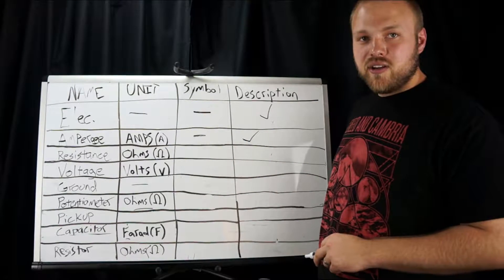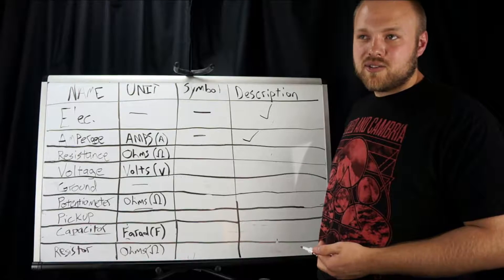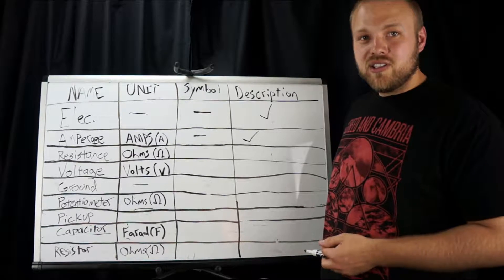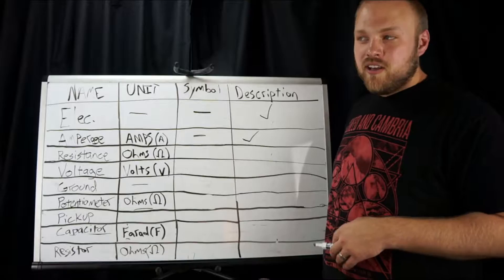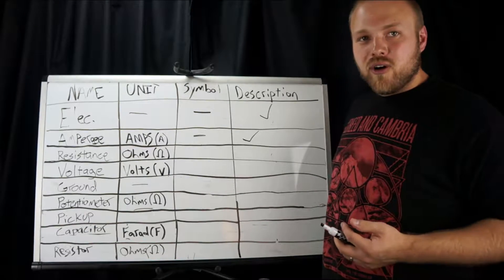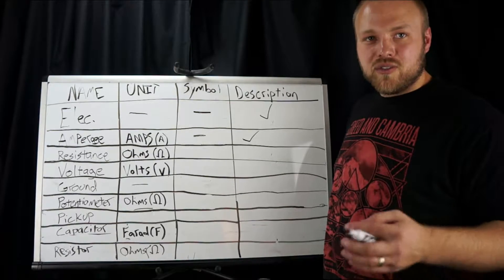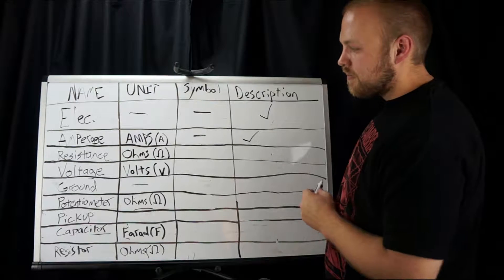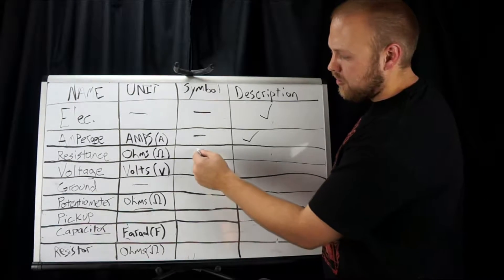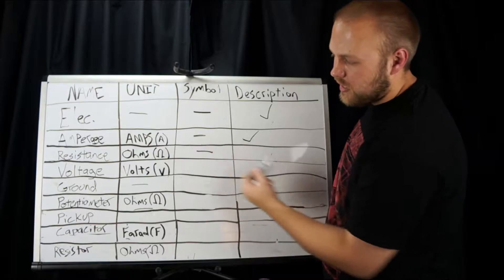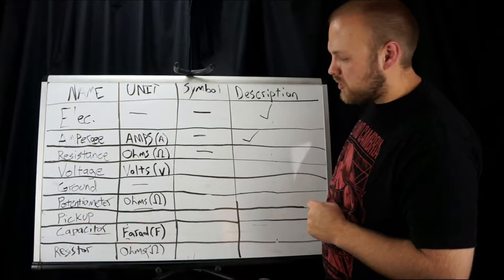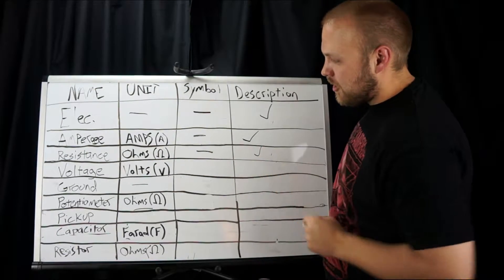Resistance has the unit of ohms and it's exactly what it sounds like. Going back to the fluid analogy, it's like putting a dam up. You're stopping flow. So you're stopping electrons from getting from A to B. Again, no symbol.